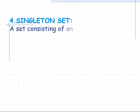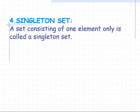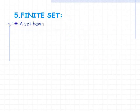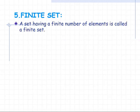Singleton set: a set consisting of only one element is called a singleton set. For example, if set A consists of only one element, 3, then this set is called a singleton set. Finite set: a set having a finite number of elements is called a finite set.